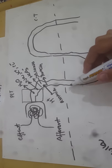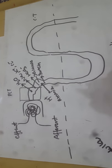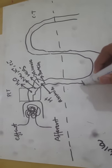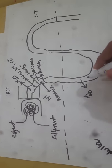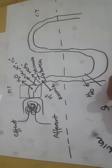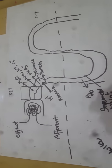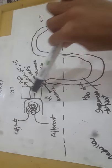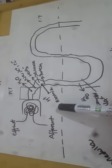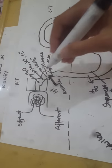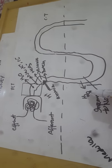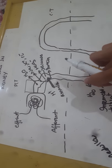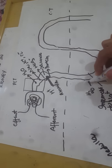Next, the descending loop of Henle comes down. Here, only water is reabsorbed. It is impermeable to sodium, which is why nothing else is reabsorbed. Nothing is secreted from the descending limb either. This is easy to remember: only water is reabsorbed in the descending loop of Henle because it is impermeable to sodium.